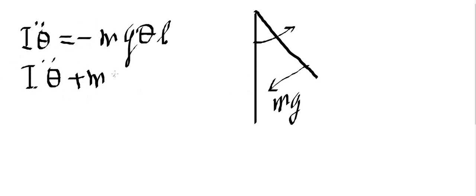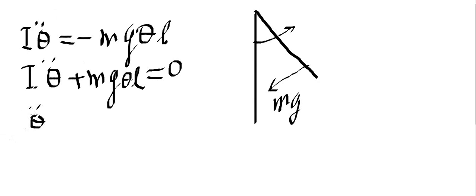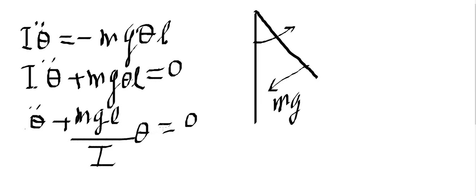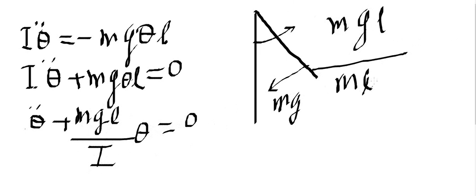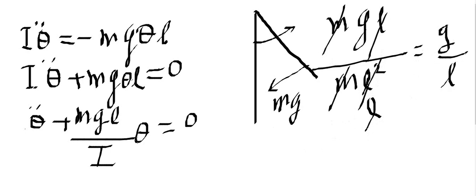We can write it like this, and then dividing both sides by I, we get: theta double dot plus (mgL/I) times theta equals zero. Now this quantity here is mgL/I, and we can write I as mL squared, so m and m cancel, L and L cancel, and we are left with g over L.